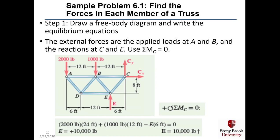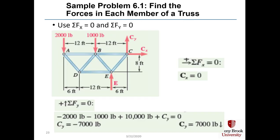Summing moments around point C and setting them to zero: the 2,000-pound force has a 24-foot perpendicular lever arm (12 + 12), creating a counterclockwise moment, and the 1,000-pound force has a 12-foot lever arm. Force E acting upward creates a clockwise moment at a distance of 6 feet. Solving this equation gives force E = 10,000 pounds acting upward. Summing forces in x and y gives CX = 0 and CY = −7,000 pounds (downward).